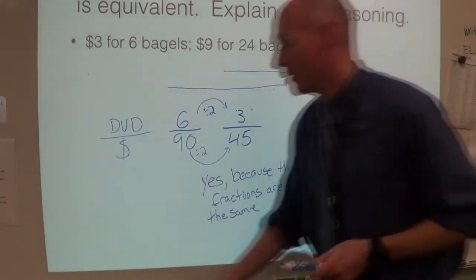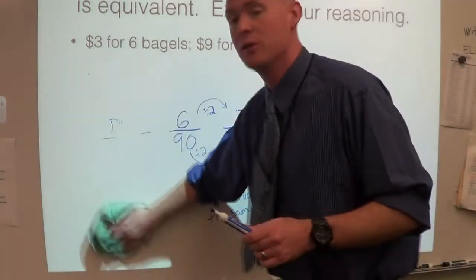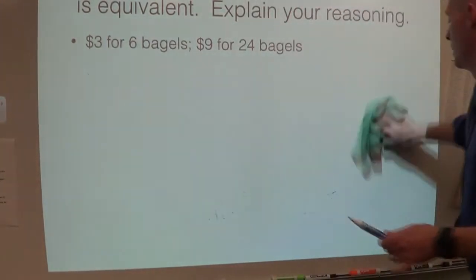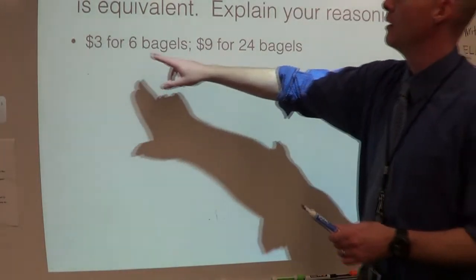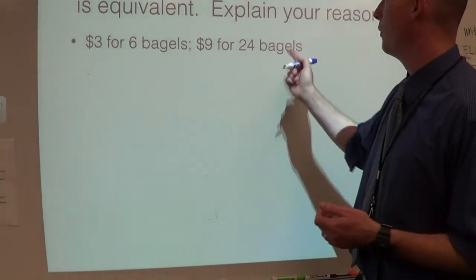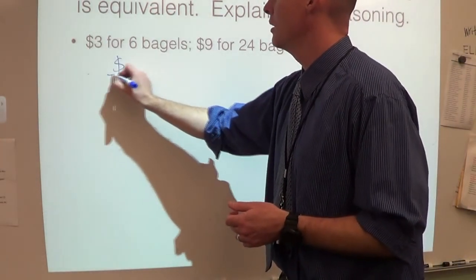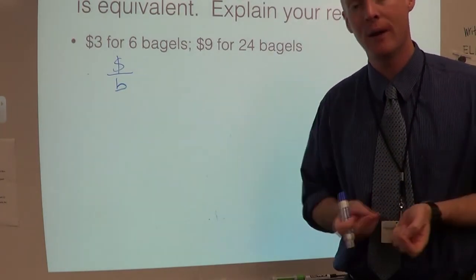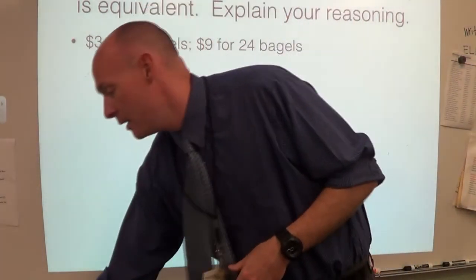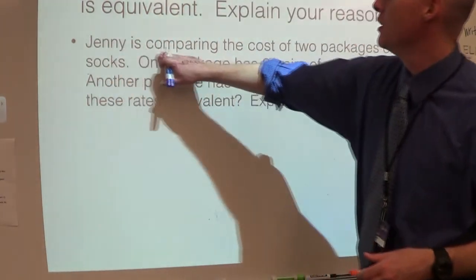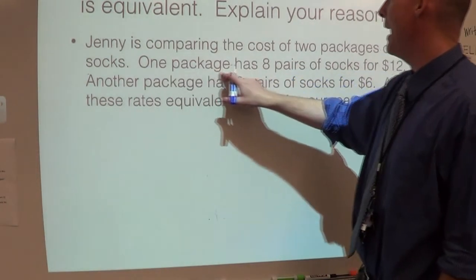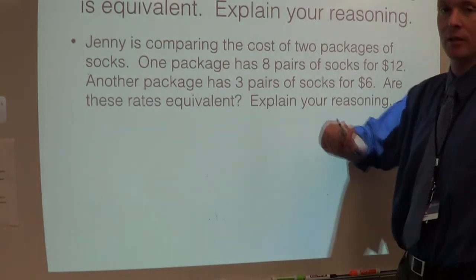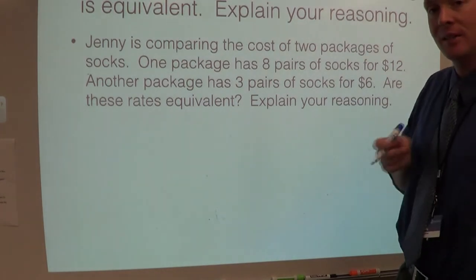Here's one I want you to try on your own. I don't care if you use unit rates or equivalent fractions — that's fine. We have three dollars for six bagels and nine dollars for 24 bagels. Set it up as dollar over bagel. Also try this one: Jenny is comparing the cost of two packages of socks. One package has eight pairs of socks for $12, another has three pairs of socks for $6. Are these rates equivalent? Explain your reasoning. Try these two on your own, bring them to class, and we'll talk about them.